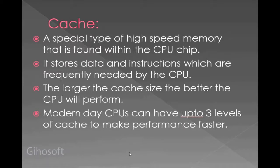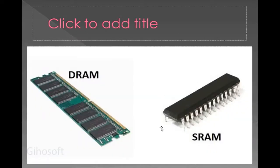Cache is a special type of high-speed memory found within the CPU chip, recently added to the syllabus. It stores data and instructions which are frequently needed by the CPU. The larger the cache size, the better the CPU will perform. Modern CPUs have up to three levels of cache — level one and level two are usually inside the CPU chip, while level three cache is a separate chip outside the CPU on the motherboard.